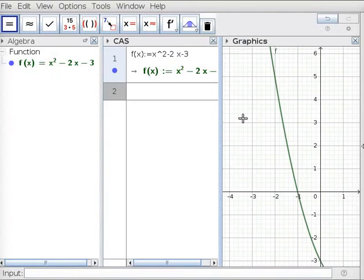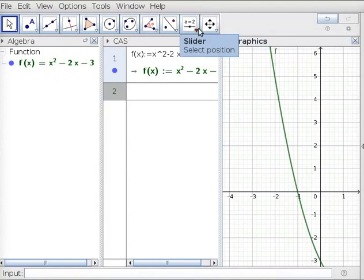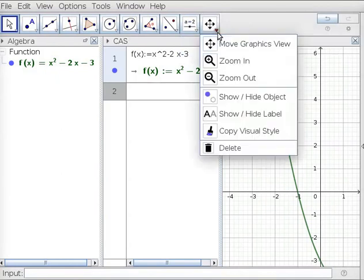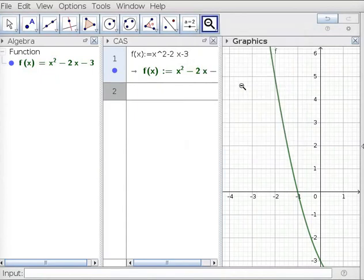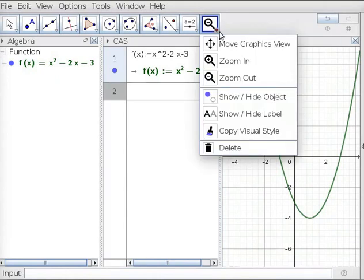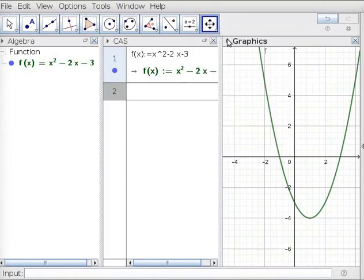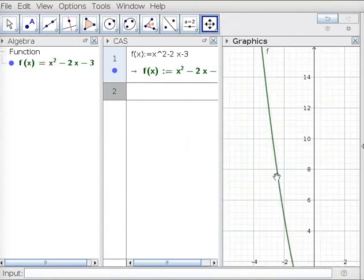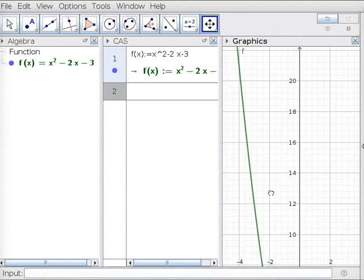Drag boundary to see graphics view properly. Click in graphics view to see graphics view toolbar. Under move graphics view, click on zoom out tool. Click in graphics view to see the minimum vertex of parabola f. Click on move graphics view tool and when hand symbol appears, drag graphics view so you can see parabola f.